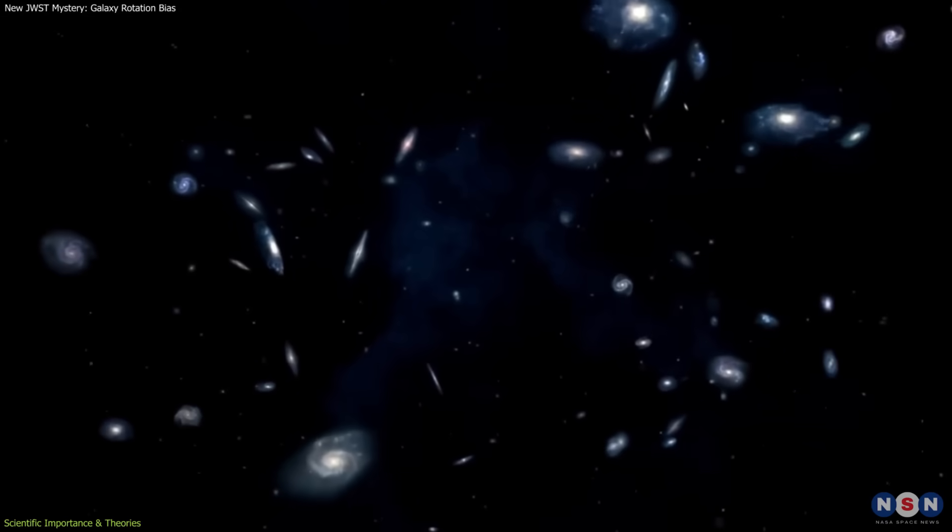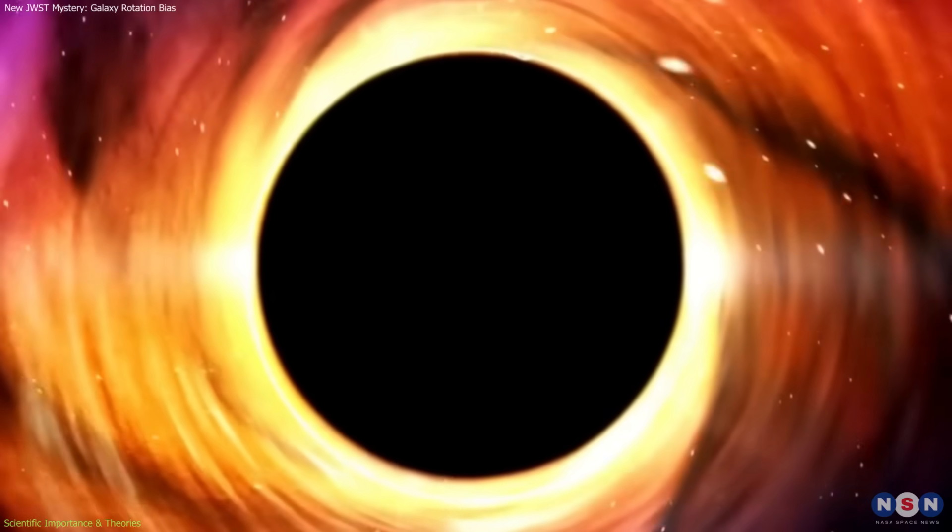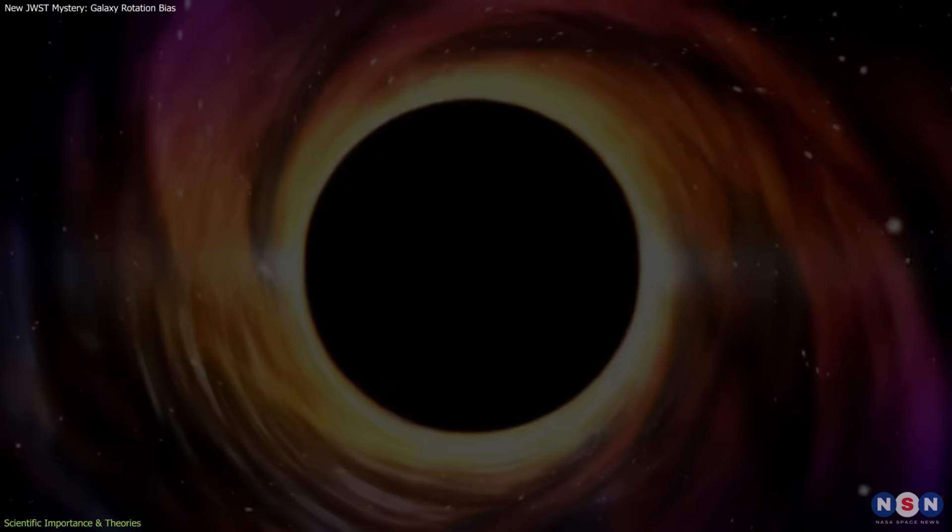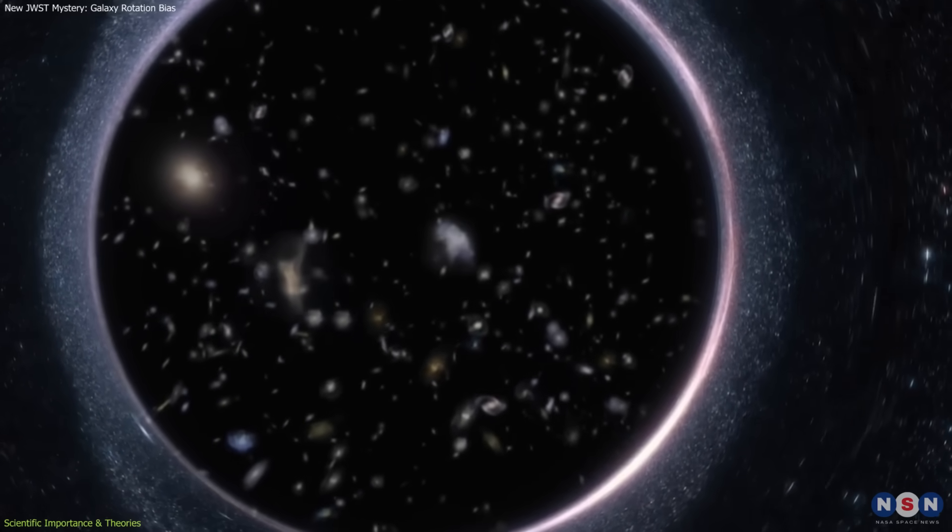This idea connects to a speculative framework called black hole cosmology, which proposes that our universe could exist inside the event horizon of a massive black hole in a larger universe. In this view, the rotation of the parent black hole might leave an imprint on our own cosmos.